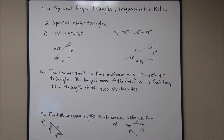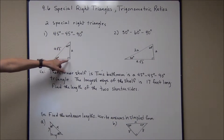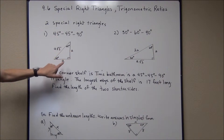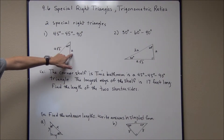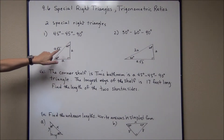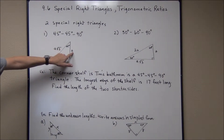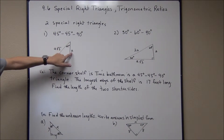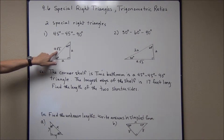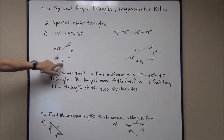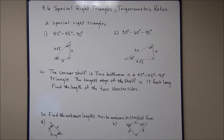With a 45-45-90, the legs are the same size — I've labeled them as A. So if this is 10 then this is 10. This makes the triangle isosceles, and the hypotenuse can be found by taking the length of either of the two legs and multiplying it by the square root of 2. So if A is 10 then the hypotenuse is 10 times √2. It also works backward: if you know the hypotenuse, divide by √2 to find the leg length.